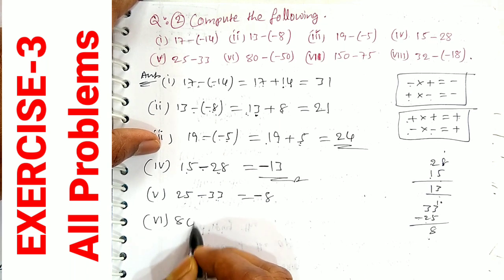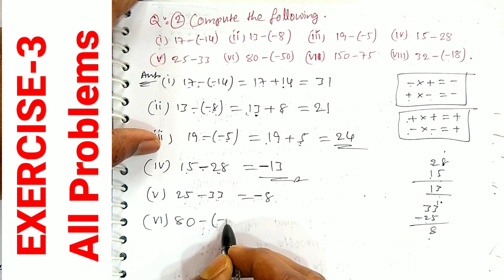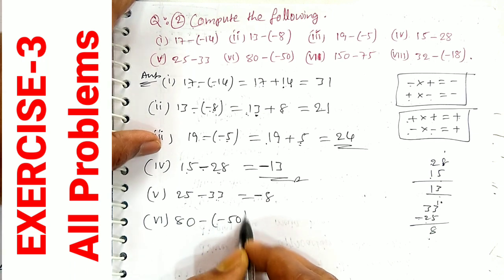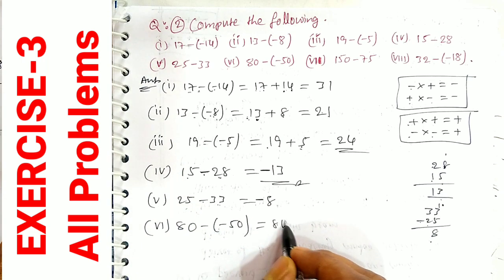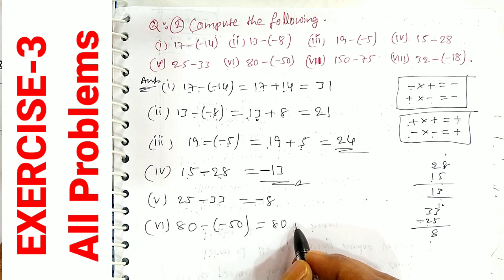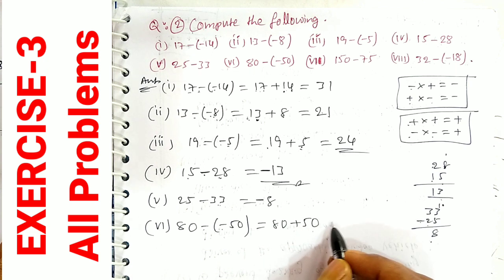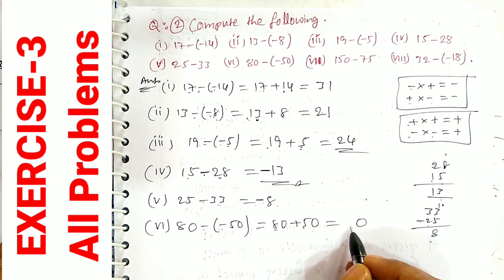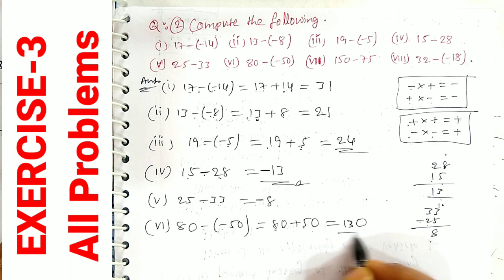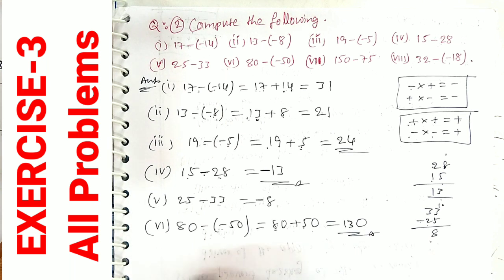Sixth one: 80 minus (-50). Minus into minus becomes plus, so 80 plus 50. Units digit: 0 plus 0 is 0; tens digit: 8 plus 5 is 13. Therefore, the answer is 130.